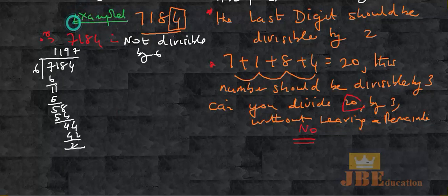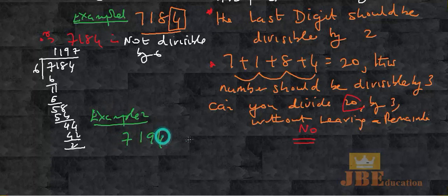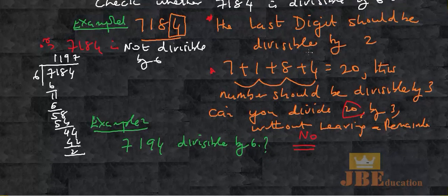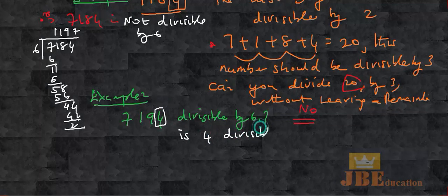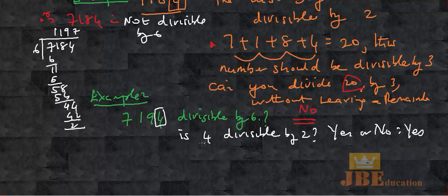Let's take example 2. The question is: is 7194 divisible by 6? First condition — the last digit should be divisible by 2. Is 4 divisible by 2? Yes, clearly you can divide 4 by 2. First condition is satisfied.